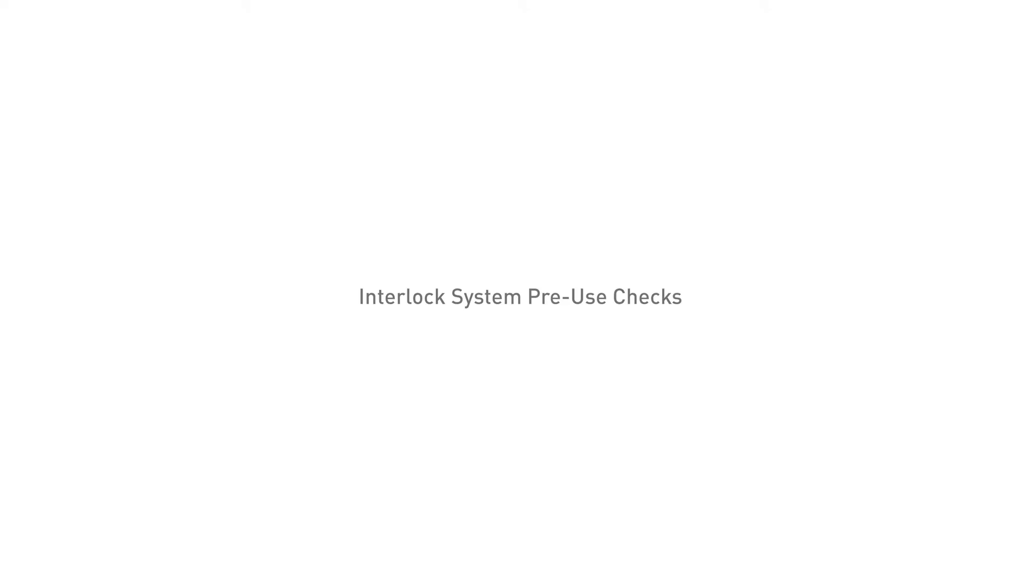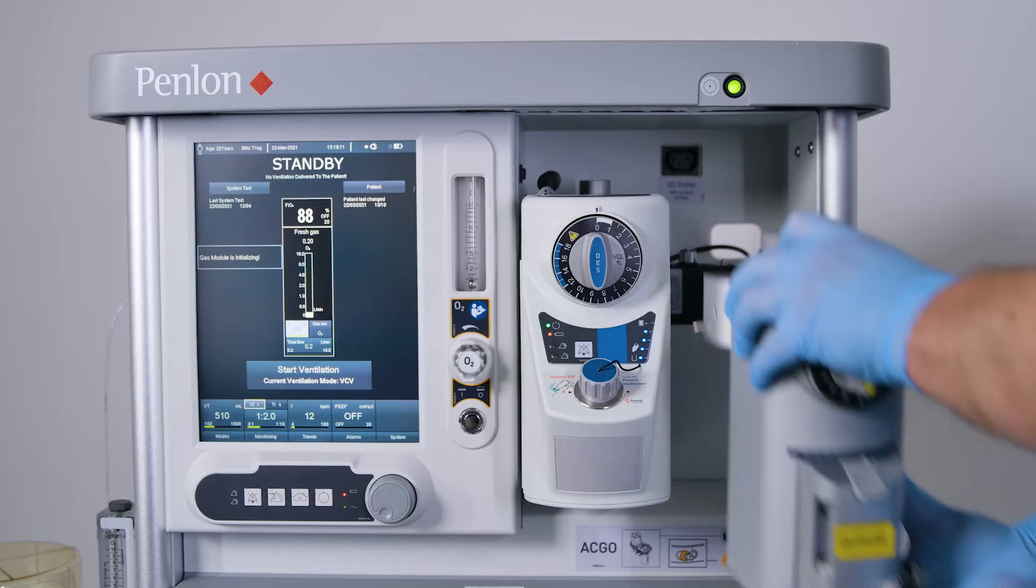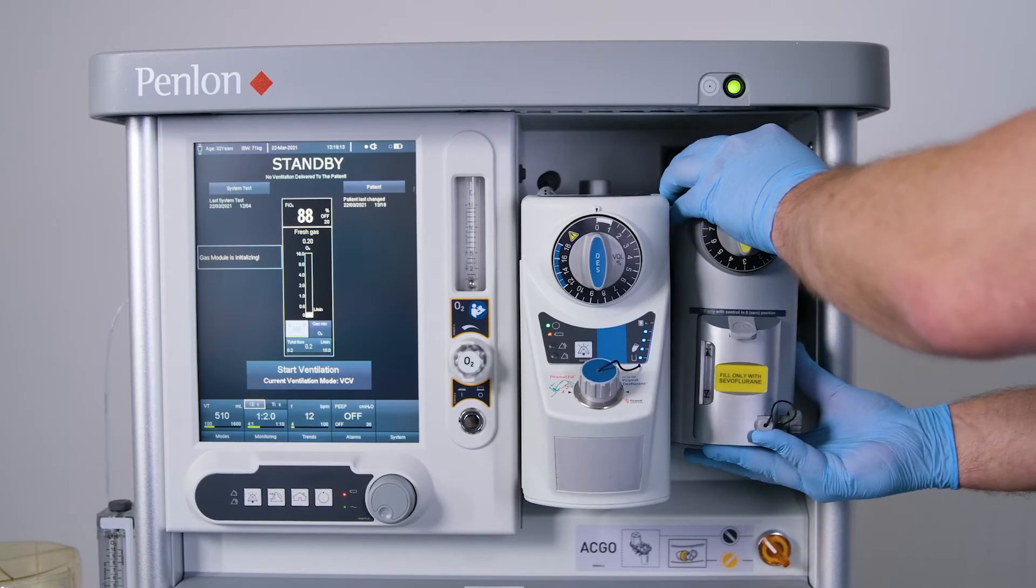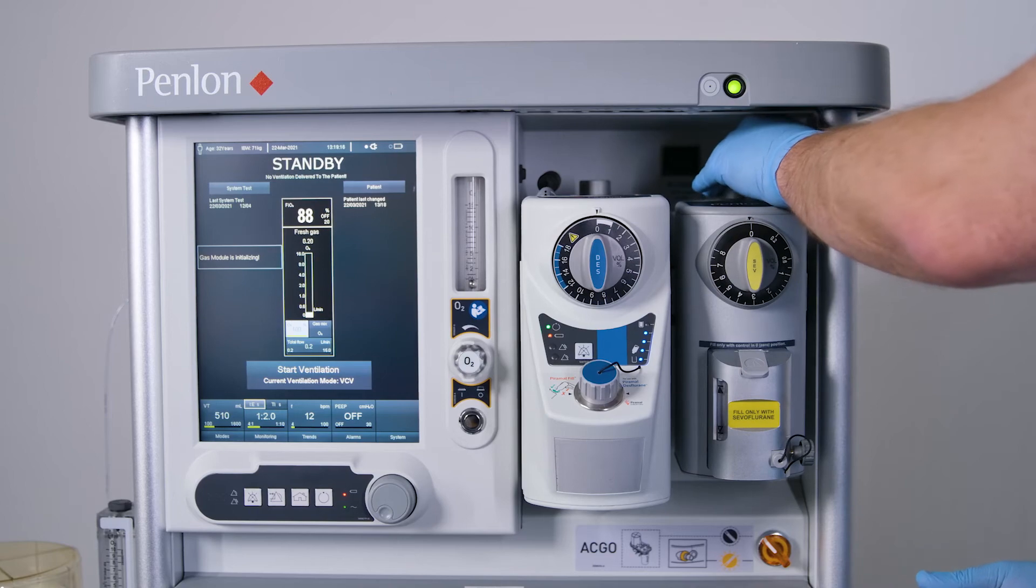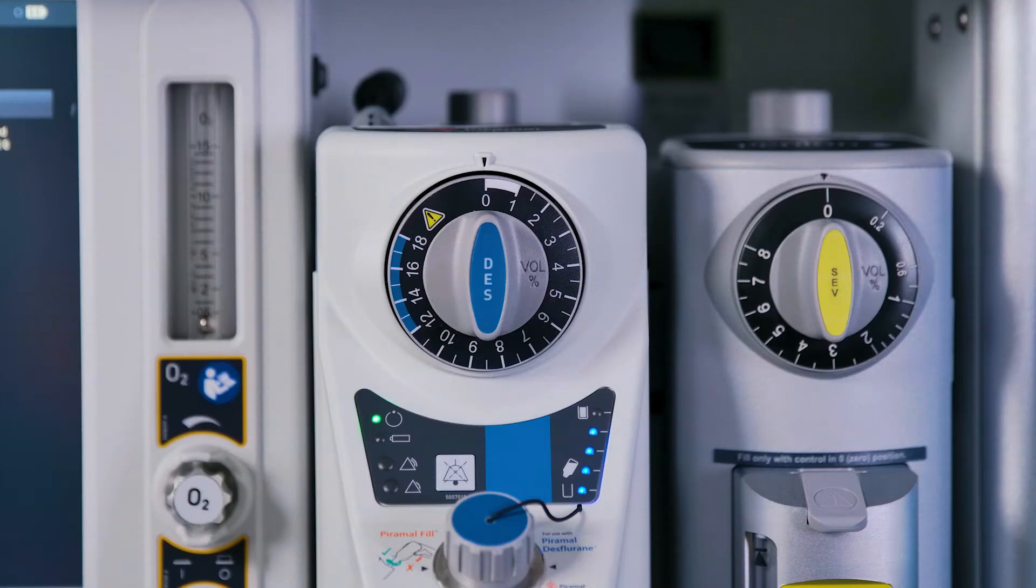Interlock system pre-use checks: Mount another vaporizer on the machine back bar adjacent to the Sigma EVA. Allow the Sigma EVA vaporizer to finish warming up and enter standby mode. This is indicated by the power indicator being continuously illuminated.